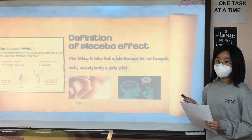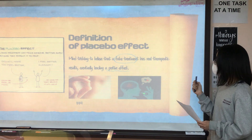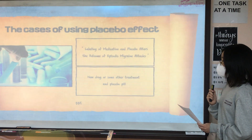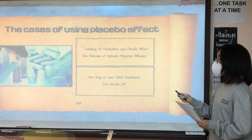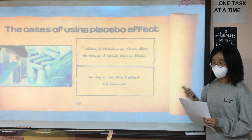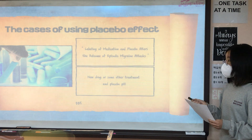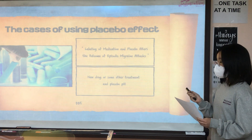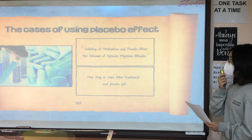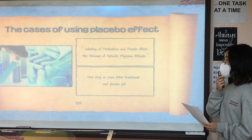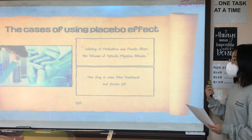Nocebo is a situation where a negative outcome occurs due to a belief that an intervention will cause harm. The second topic is the cases of using the placebo effect. The first case is testing a new drug or treatment using a placebo pill. Many companies that make new drugs use the placebo effect to test their new drugs. For example, this article is about labeling of medication and how a placebo alters the outcome of episodic migraine attacks — a study comparing placebo and real medicine.